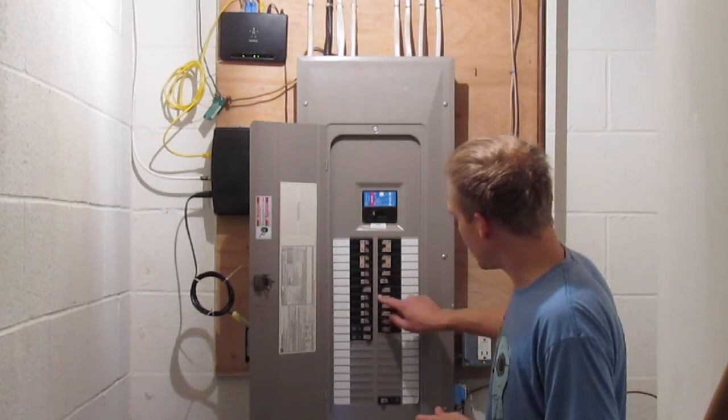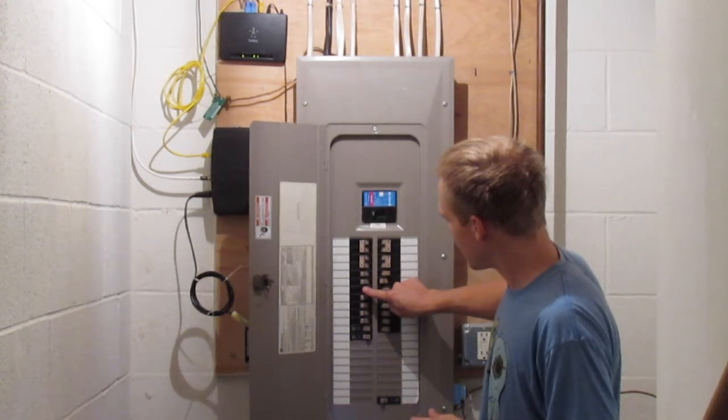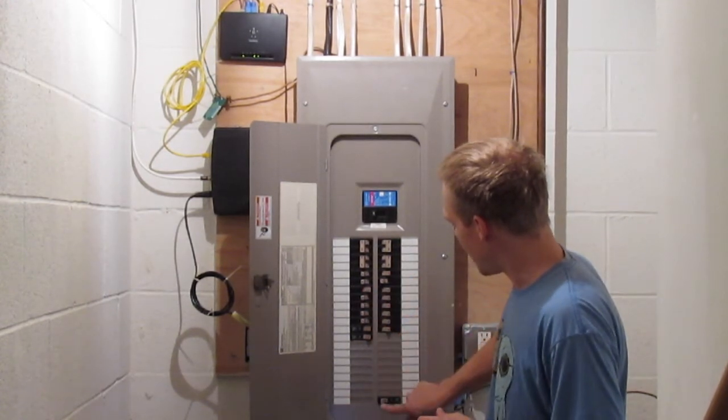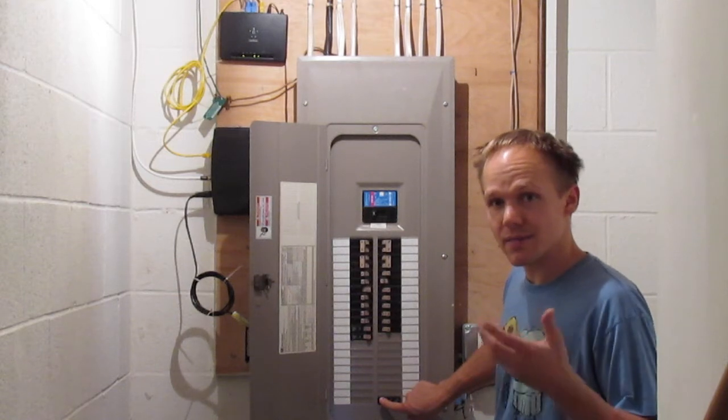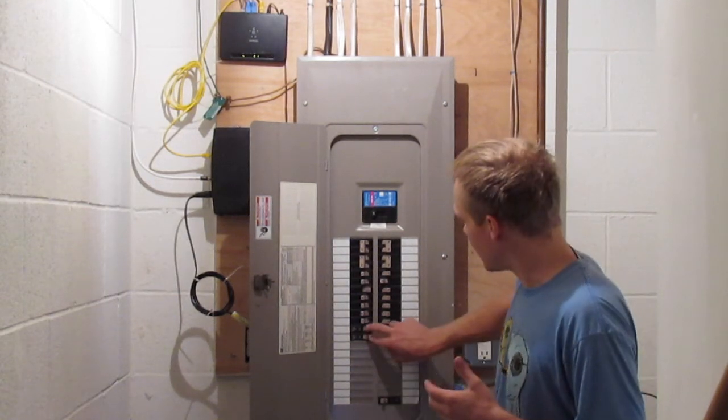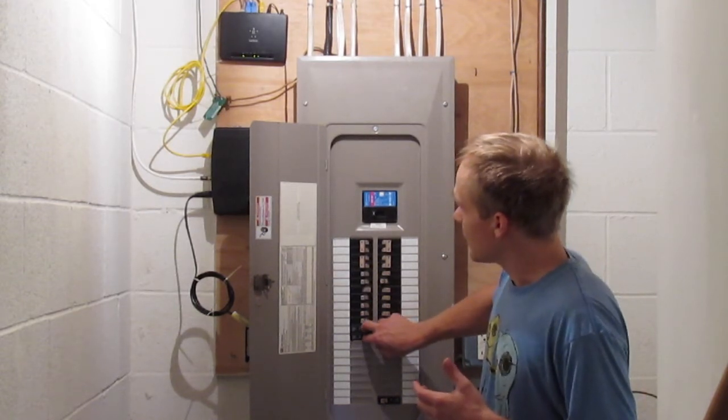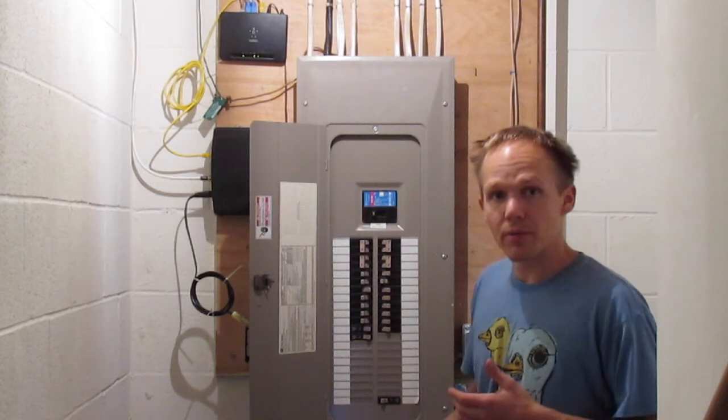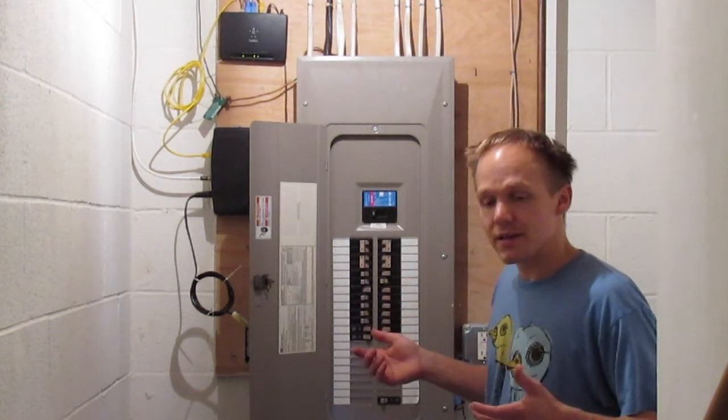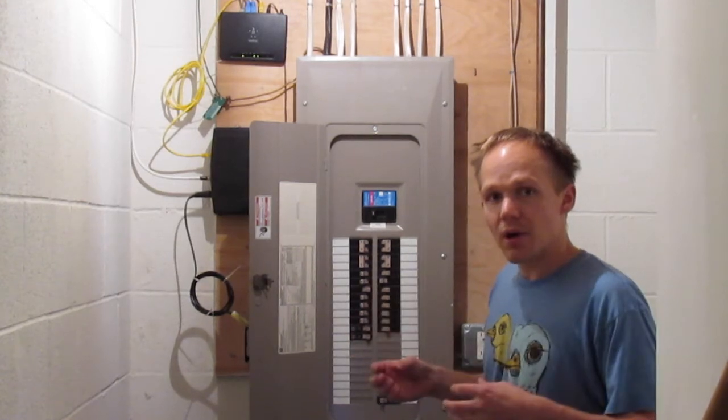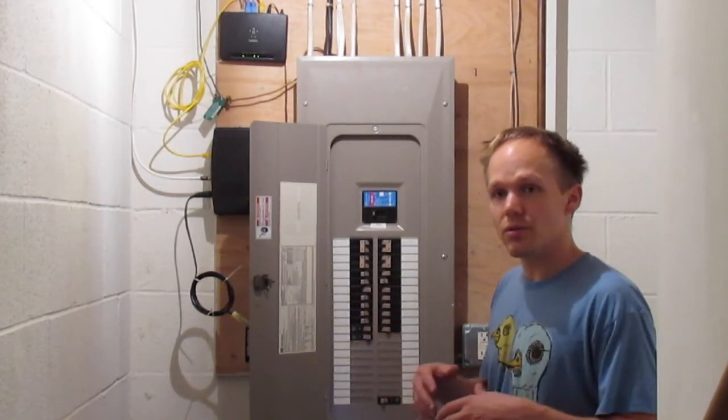Right now we have the refrigerator on, we have the office on, we have this light on that is lighting me up, and then we have two other circuits that are powering the modem and router. Everything else is off, and the reason is because by having them off, it cuts the electric field to all of those circuits.